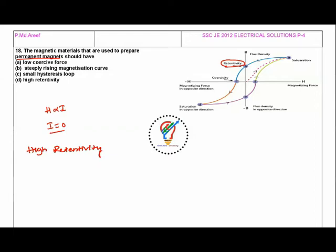If you want to make permanent magnets, the metal should have high retentivity. That means it should act as a permanent magnet, not an electromagnet. So the answer is high retentivity.